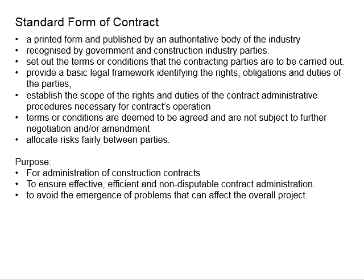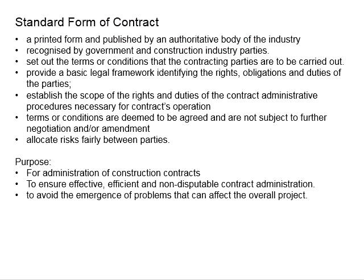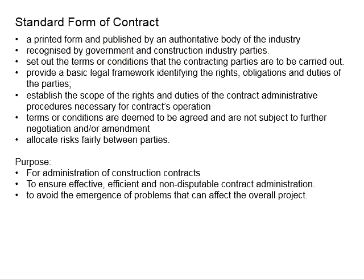The standard form of contract is basically a printed form published by an authoritative body in the industry. This standard form of contract is recognized by the government as well as the construction industry parties. It basically sets out the terms or conditions that all the parties participating in a project are to carry out.